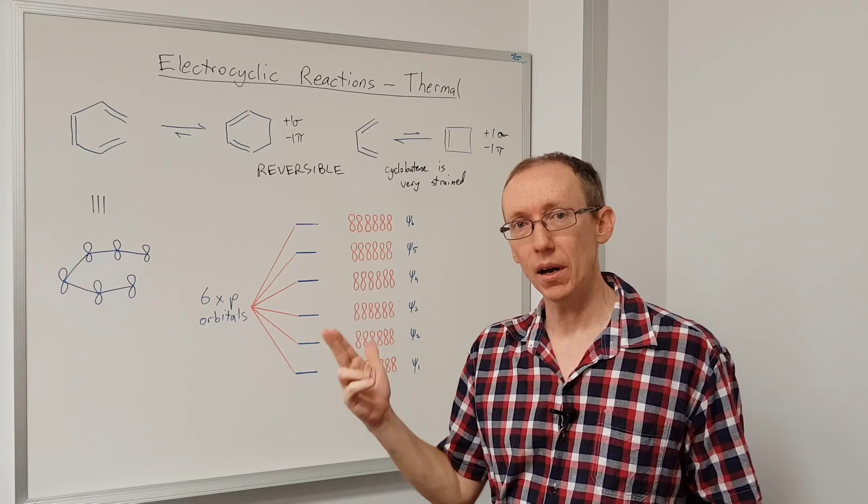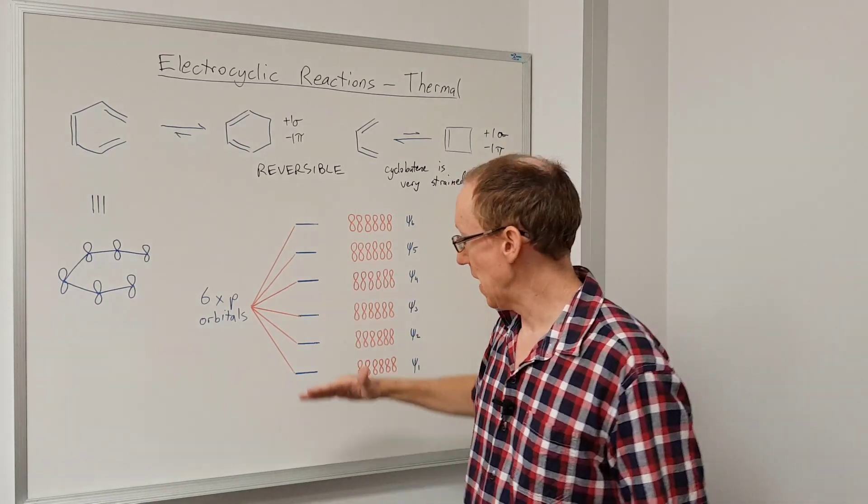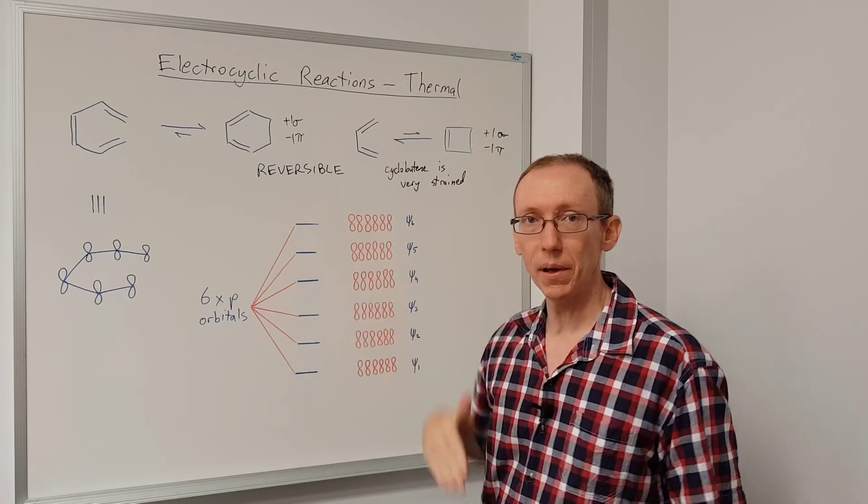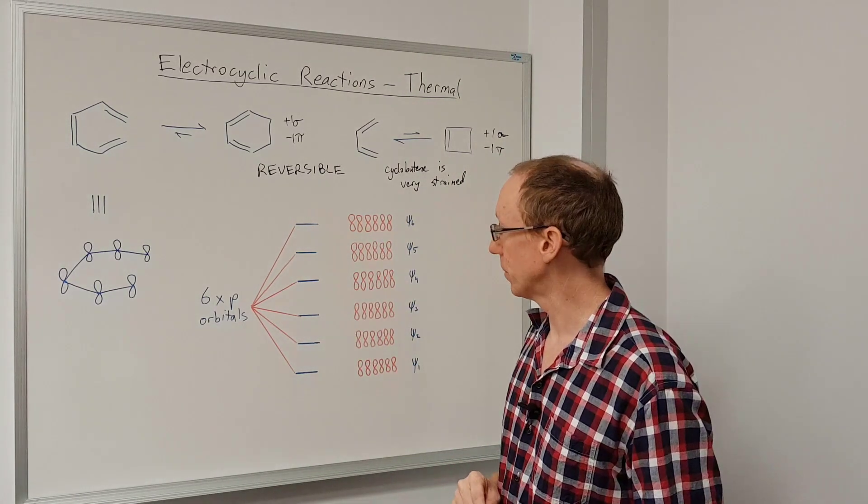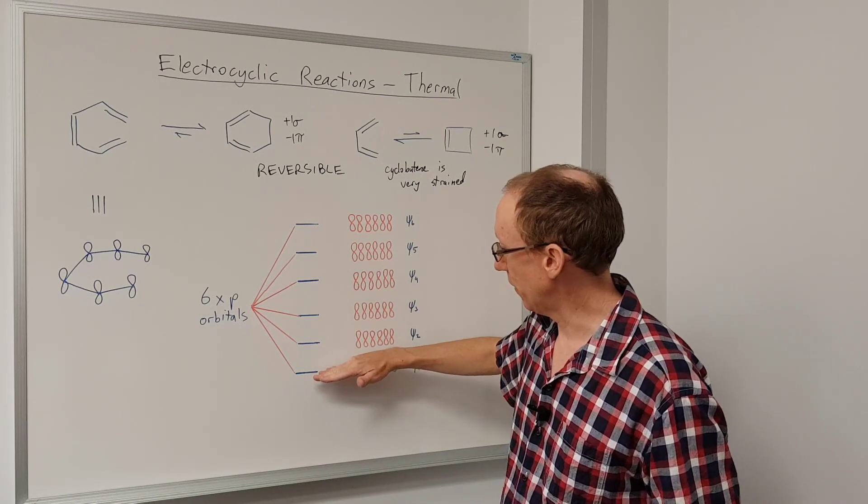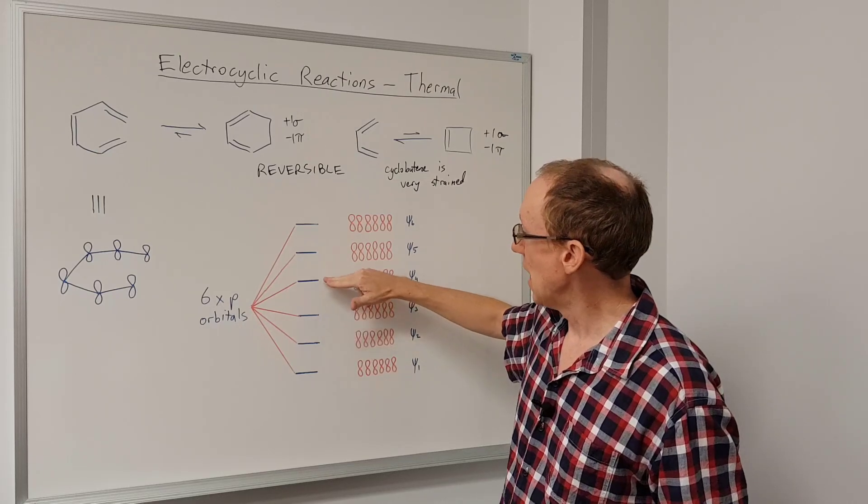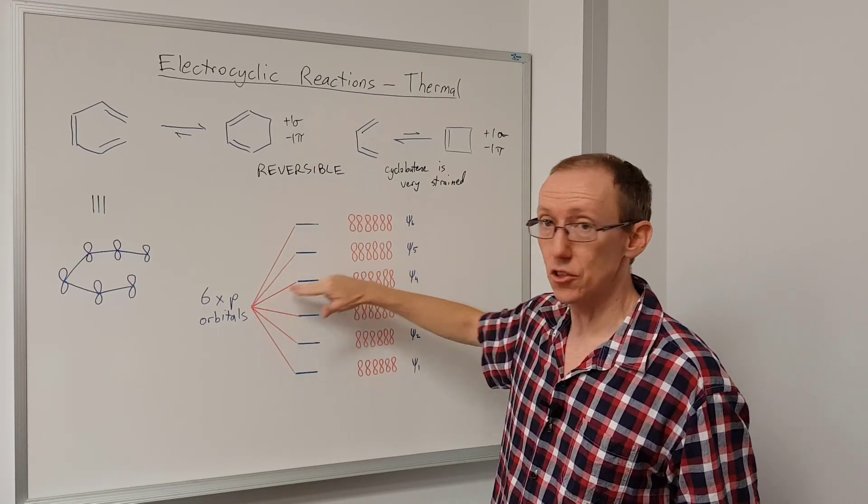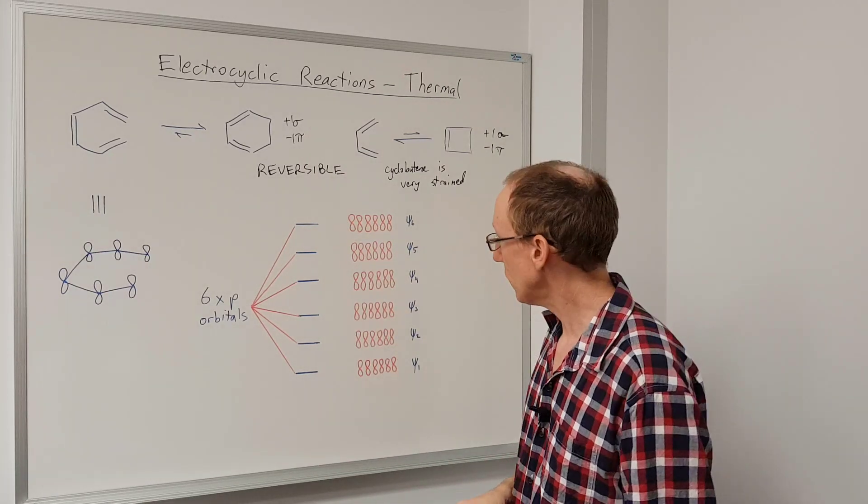When we overlap those p orbitals to make a pi system, we're going to generate six new molecular orbitals, and they're going to be at different energy levels depending on how the phases of each atomic orbital overlap. We're going to have very low energy, higher energy, and then this third energy level here. And then we're going to go above the energy of the atomic orbitals, so these are going to be anti-bonding orbitals up here.